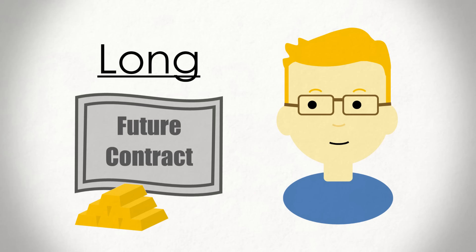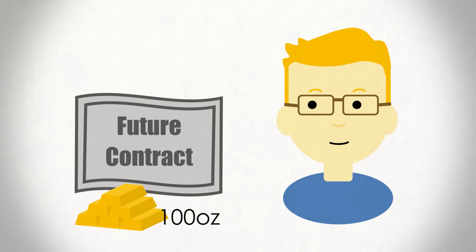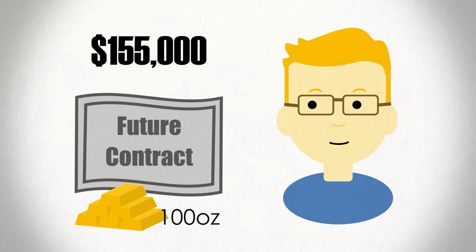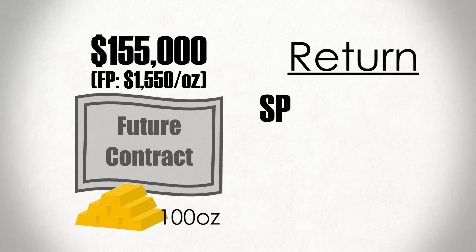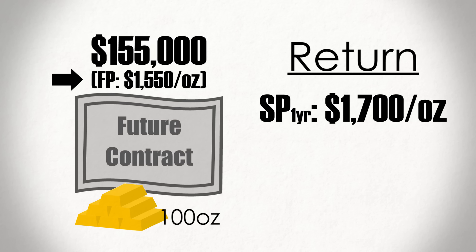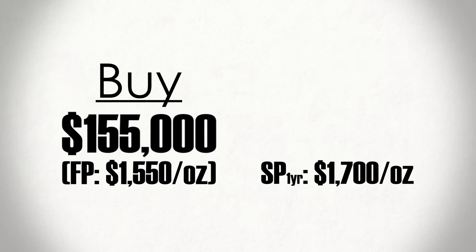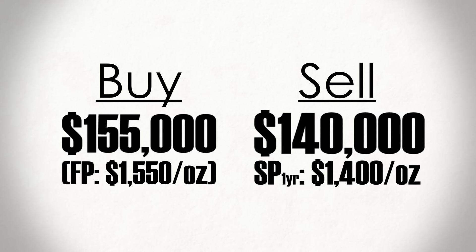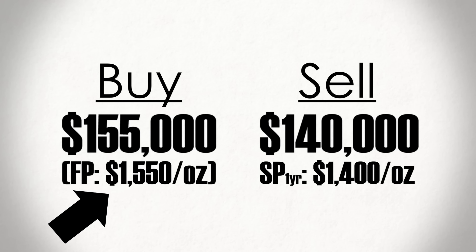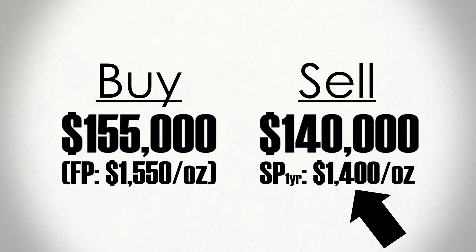But going back to our example. For the gold contract, you decide to take a long position, agreeing to buy 100 ounces for a total of $155,000 — the price per ounce times 100 ounces. The money you make, your return, will depend on the spot price of the asset when the contract expires in one year. If the price increases above $1,550, say to $1,700, then you'll earn a profit of $15,000, since you'll buy the gold for $155,000 and sell it at the spot market for $170,000. If it instead falls to $1,400, then you'll lose $15,000, since you'll have to buy the gold at a future price that's higher than the current spot price.